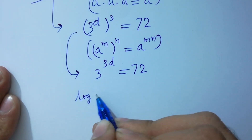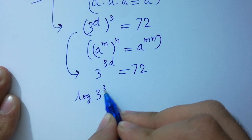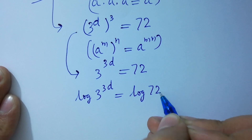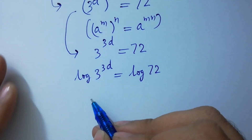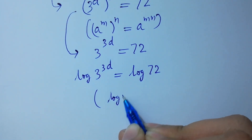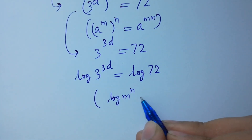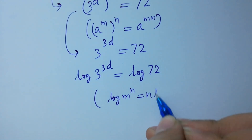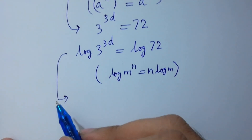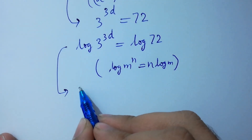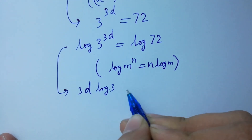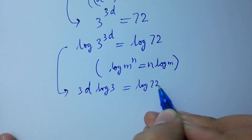Log of 3 to the power 3d equals log 72. Since log m to the power n equals n·log m, we have 3d·log 3 equal to log 72.